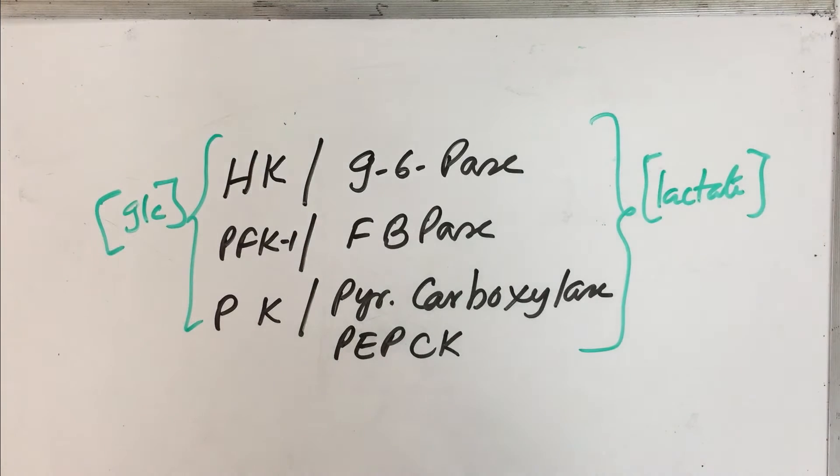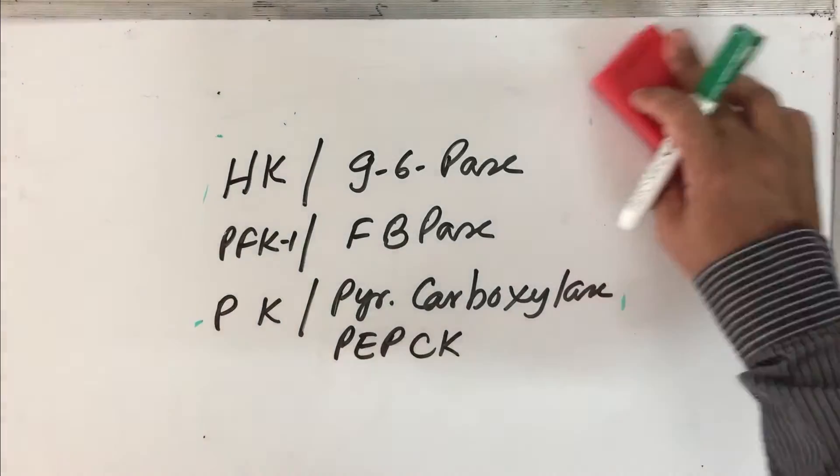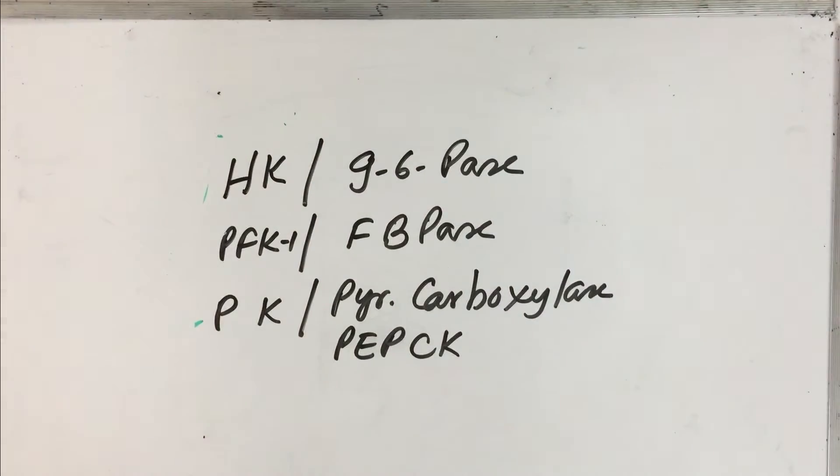The forward reaction as well as the reverse reactions can be independently regulated in this pathway. That is the beauty of this coordinated regulation. These can be independently regulated. So these are the seven enzymes. You are very familiar with these enzymes and the reactions they catalyze. These three enzymes are involved in regulation of glycolysis. We have seen the regulation elaborately in a video.